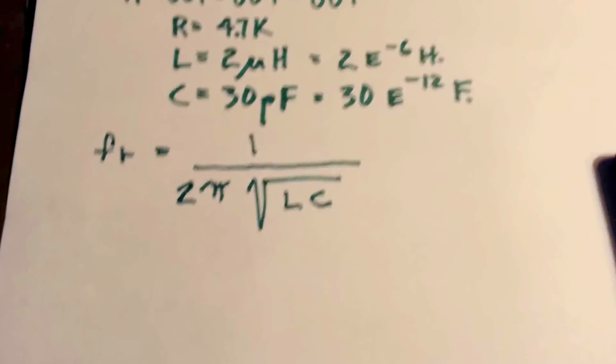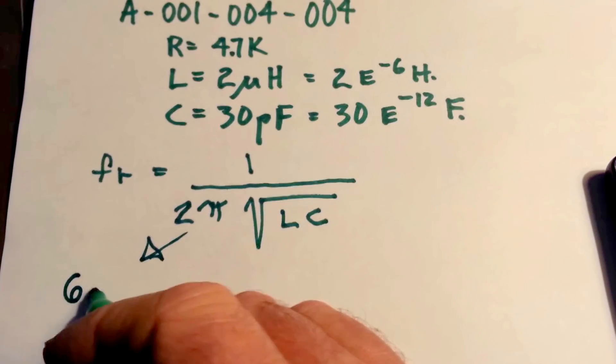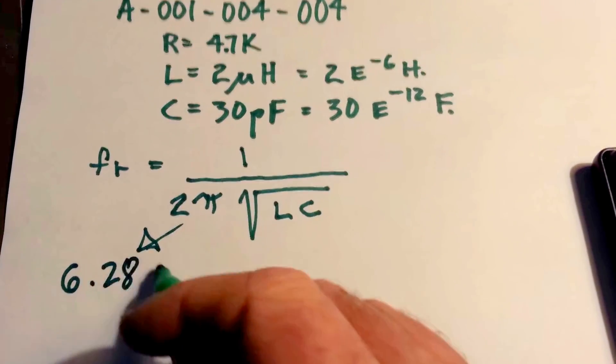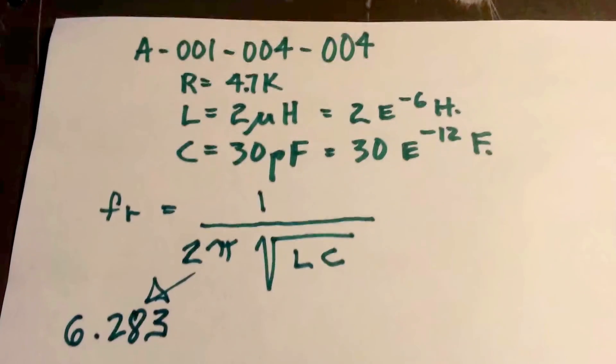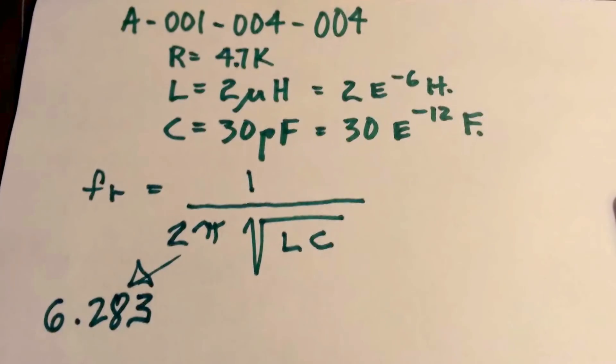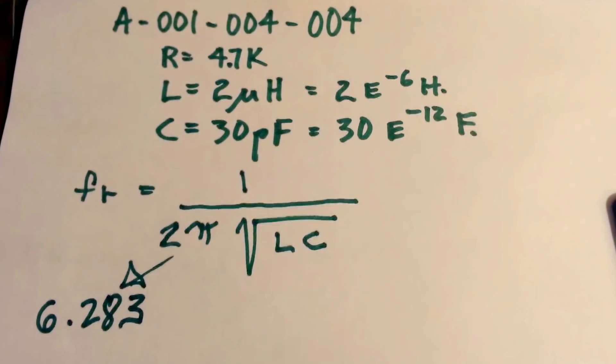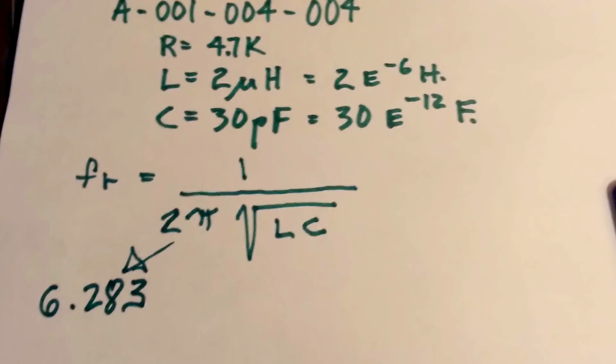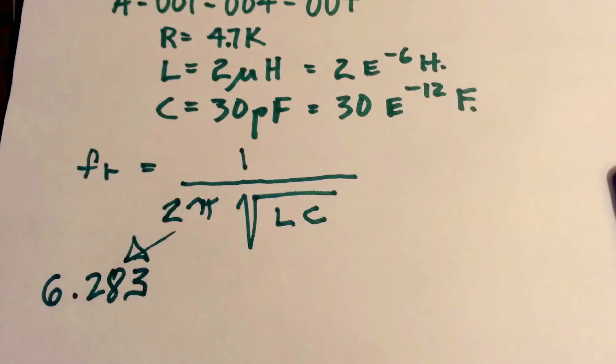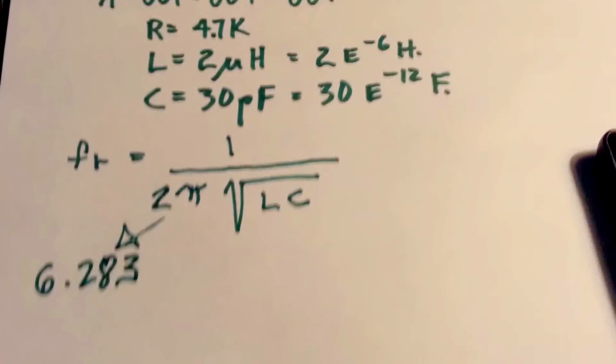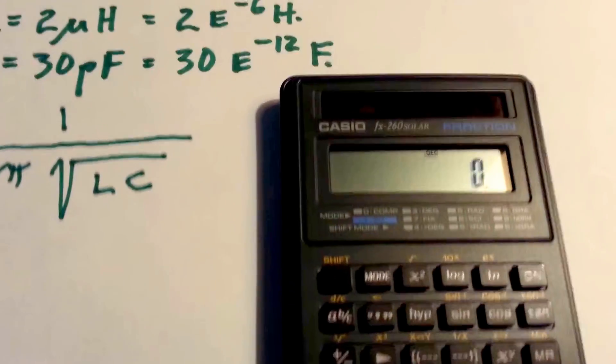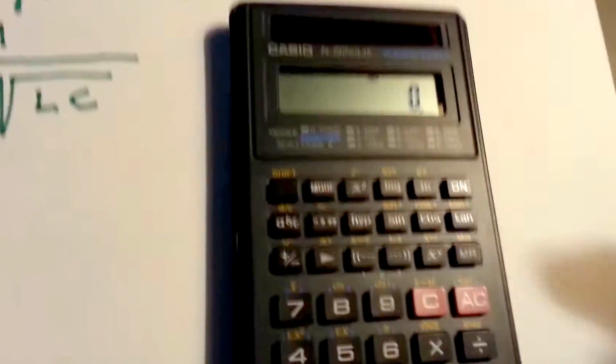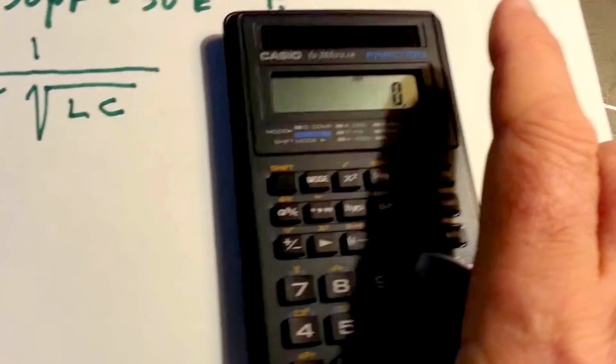And 2 pi is just 6.283. We could go through a long algebra thing, but the easiest way to do this is on a scientific calculator. So let's give that a shot here right now. I'm trying to move this around for the light.